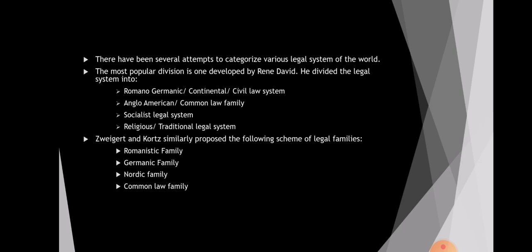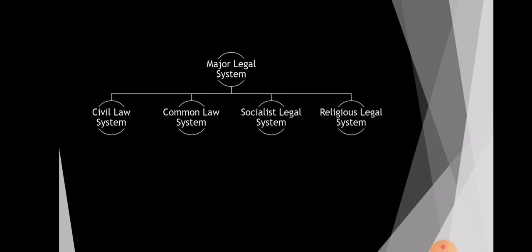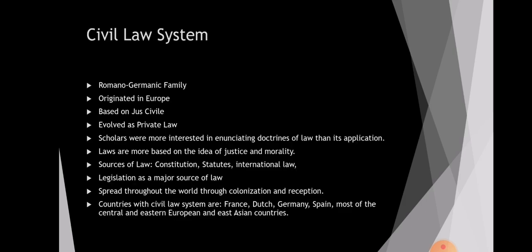René David also gave a similar classification consisting of the Romanism family, Germanic family, Nordic family, and common law family, but it is mainly focused on European countries. The major legal systems we will be discussing today are the civil law system, common law system, socialist legal system, and the religious legal system.